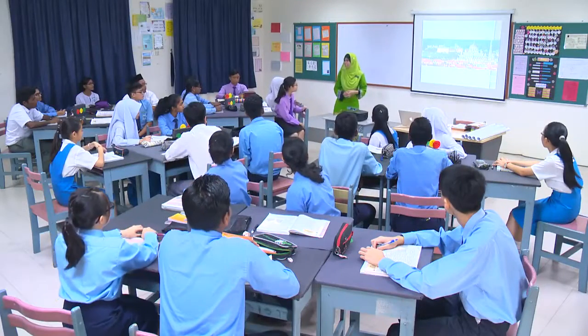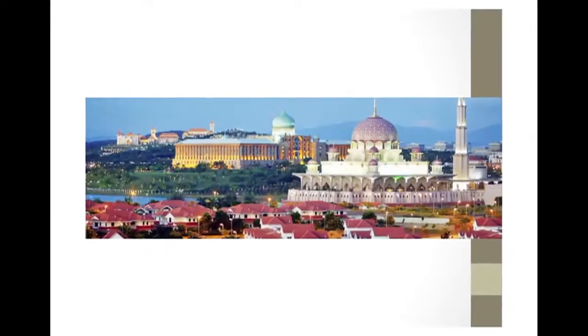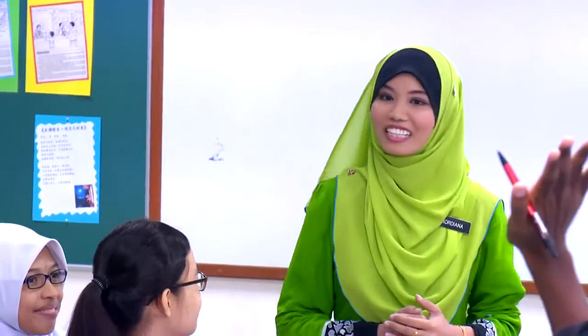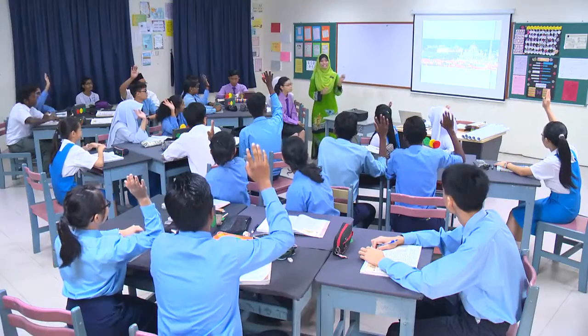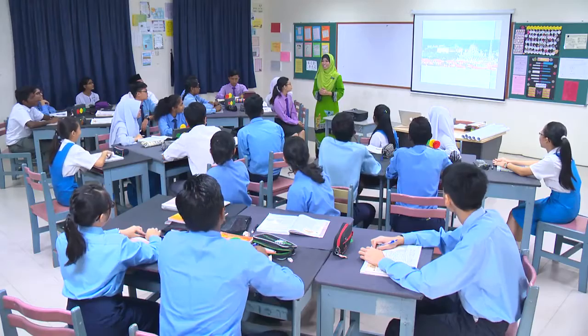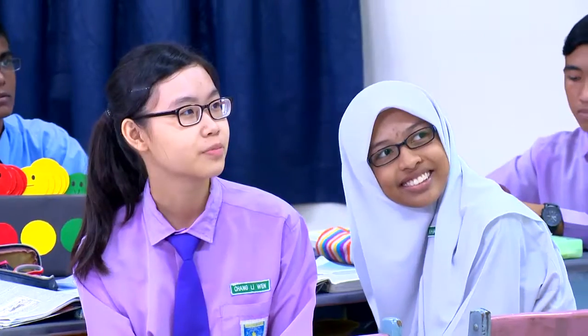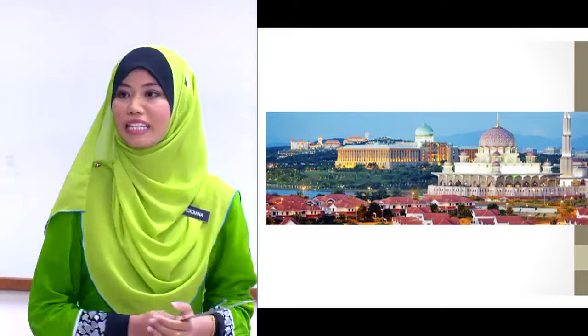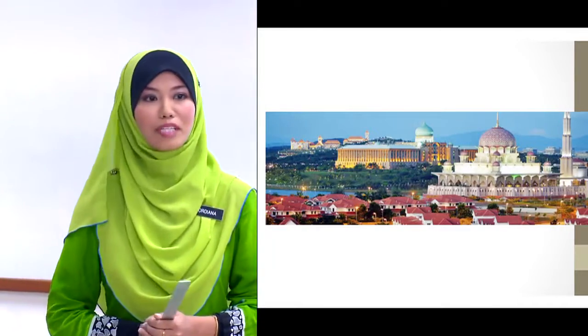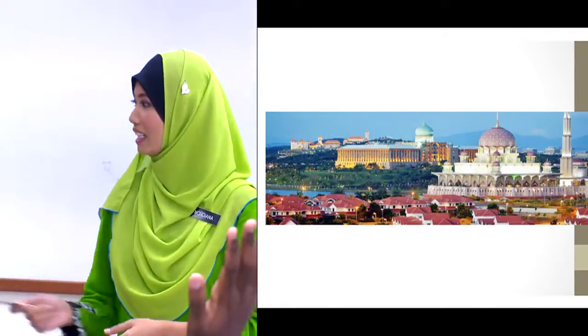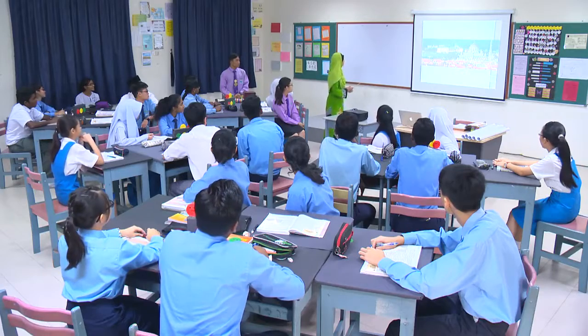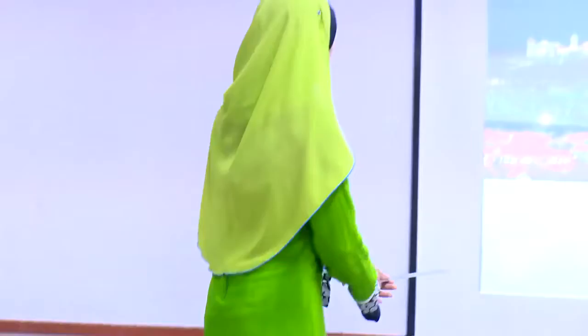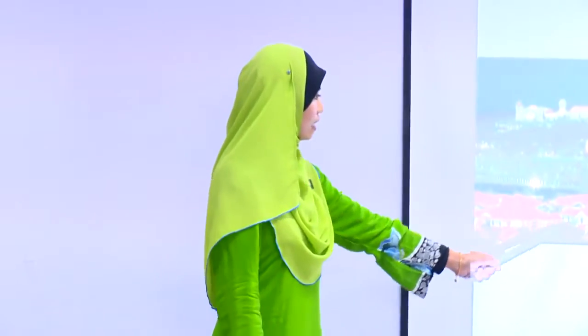Semua biasa dengan gambar ini? Siapa yang pernah pergi ke sini? Di mana lokasi ini? Putrajaya. Ya, tepat sekali. Daripada gambar ini, apa yang dapat kamu perhatikan? Ada siapa-siapa boleh cuba? Ya, Ikhma? Saya dapat lihat kawasan perumahan yang tersusun, Cikgu. Ya, kalau kita perhatikan terdapat kawasan perumahan di kawasan Putrajaya.